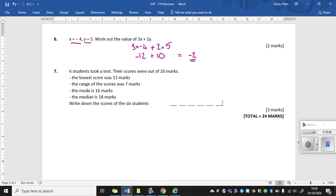Final question. Six students took a test. Their scores were out of 20. So the lowest score was 13 marks. The range was 7. The mode was 16. The median was 18. Write down the scores of the six students. So I've got six gaps here. I need to work out what six scores were. And well the first one I can write in is the lowest score. Which is 13. So I'm going to have these in order. I'm going to put 13 there. That is my lowest number. So it's going to go in that spot. So I shouldn't have any numbers lower than 13 now.